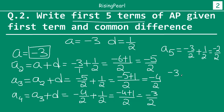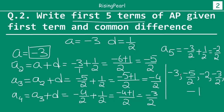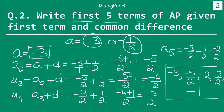So we write minus 3. Second term is minus 5/2. The third term we can write as minus 2. Fourth term is minus 3/2. And the last term we can write as minus 1. So this is going to be the first 5 terms of the arithmetic progression whose first term is minus 3 and common difference is 1/2.